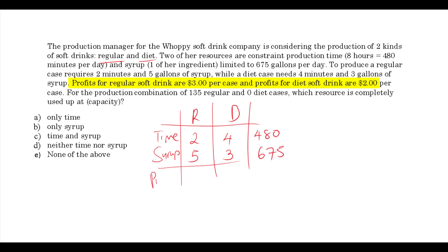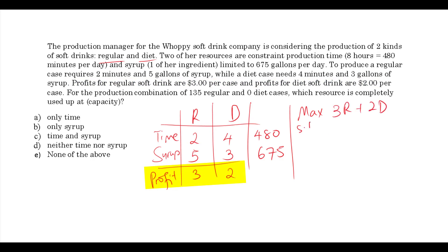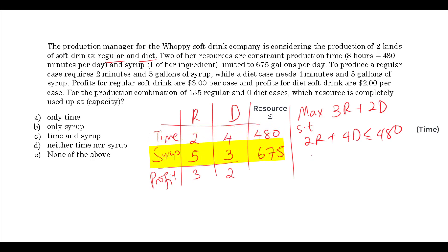We have profit: $3 per case of regular and $2 per case of diet. So we have a model that looks like this. We want to maximize profit, which is going to be 3R plus 2D, subject to constraints 2R plus 4D less than or equal to 480, and 5R plus 3D less than or equal to 675, along with the non-negativity constraints.